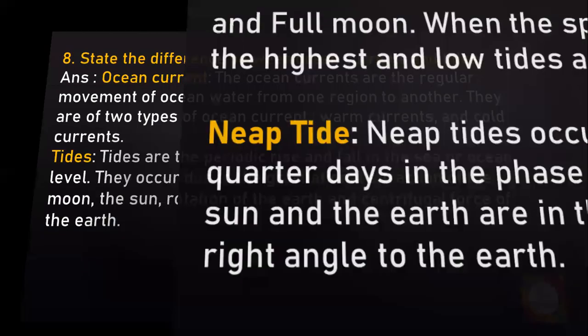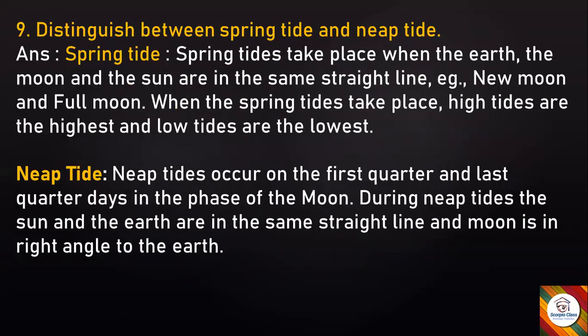Distinguish between spring tide and neap tide. Spring tides take place when the earth, the moon, and the sun are in the same straight line — for example, during new moon and full moon. When spring tides take place, high tides are the highest and low tides are the lowest.